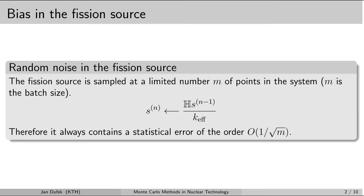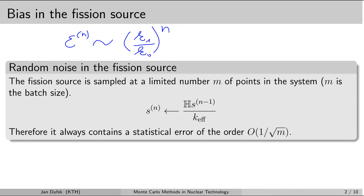In the previous lesson we studied the convergence of the fission source in criticality simulations. The important result was that the error is dominated by the decay of the first higher eigenmode in the fission source, and this decay is given by the dominance ratio. If we denote the error in the fission source at cycle n as epsilon_n, then epsilon_n is approximately given by (k1/k0)^n. This ratio k1/k0 is called the dominance ratio.